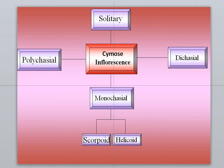If the cymose inflorescence has multiple branches, there can be two branches — that is dichasial — or if there are more branches, that is called polychasial. If there is only one branch, it is called monochasial. It can again be divided into scorpioid and helicoid. These are the different types of cymose inflorescence.